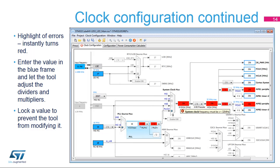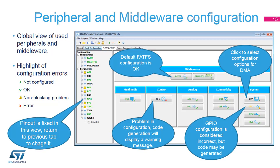The configuration tab of the main window provides an overview of all the configurable hardware and software components that STM32CubeMX can help set up. Each button is displayed with a small icon indicating the configuration state. The default state is 'not configured.' Clicking a button for a peripheral or middleware displays its configuration options. Warning signs provide notifications about incorrect configurations, and the peripheral will not work if code is generated in this state. Critical errors are represented by a red X, and the configuration must be modified to continue.